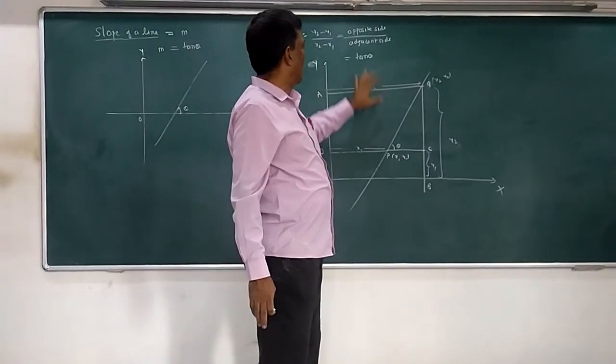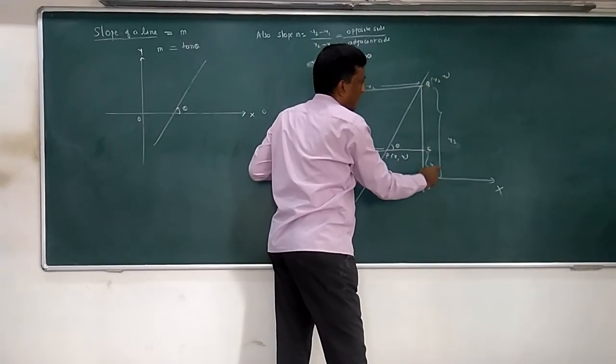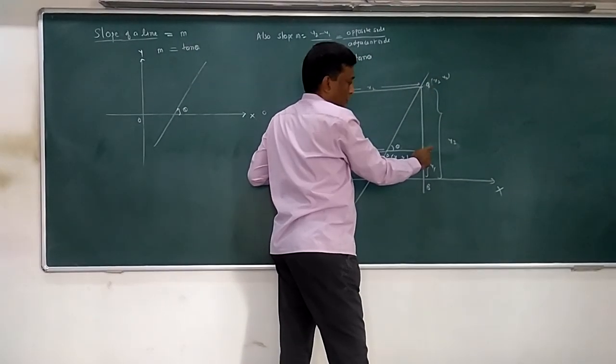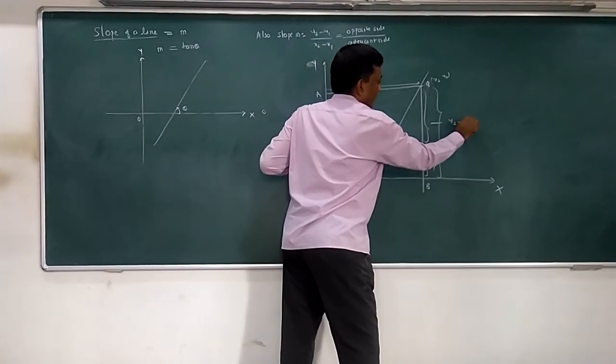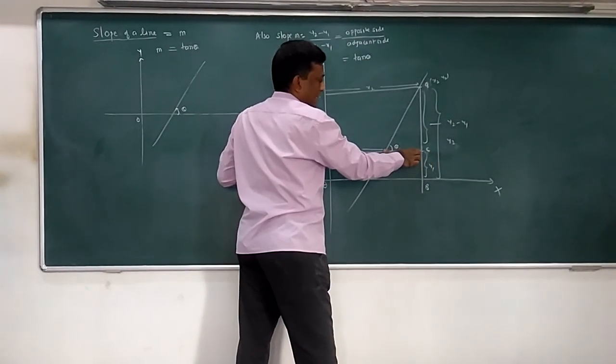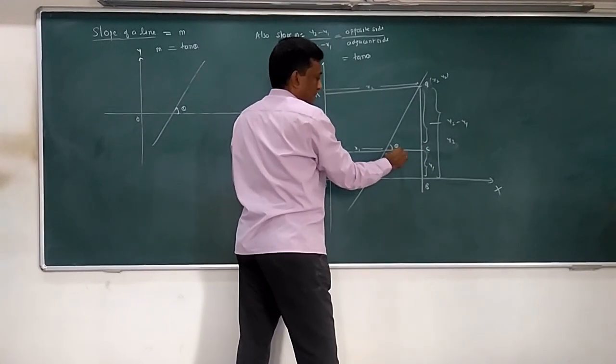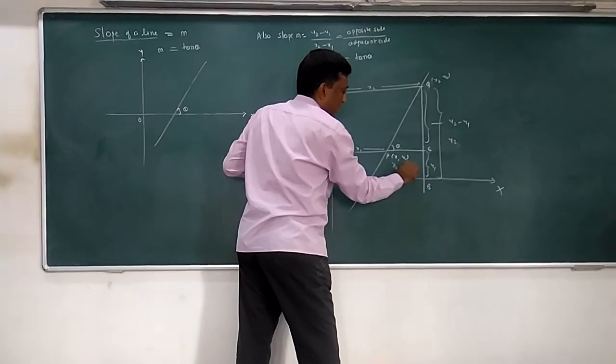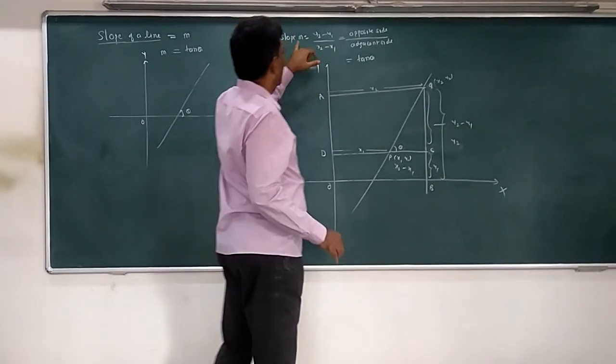So basically, you get y2 minus y1. If you see properly, y2 minus y1, if I do, I get length QC. This is your y2 minus y1. And if you talk about this length PC, it is nothing but x2 (total length) minus x1. So this length is x2 minus x1, which is the adjacent side.